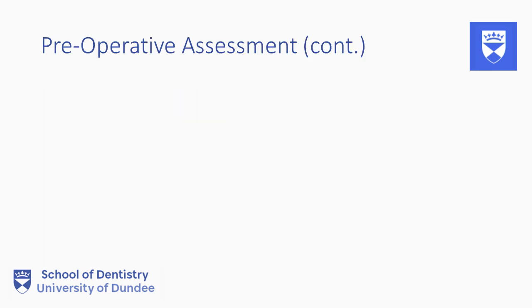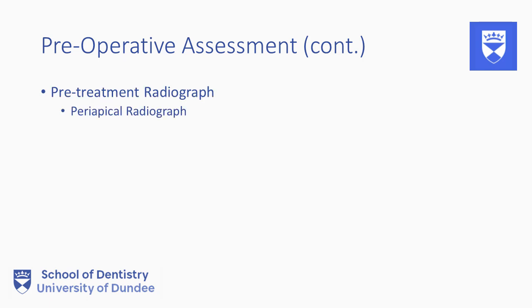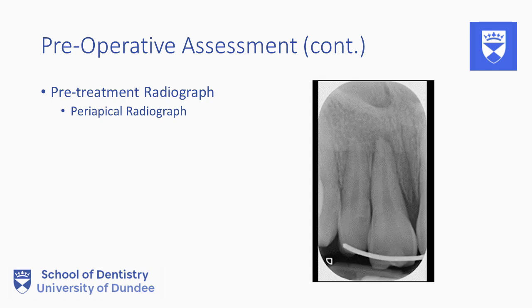A periapical radiograph of the tooth in question should be taken to assess the root and canal morphology and status of the periapical tissues. This can be used to determine the estimated working length.